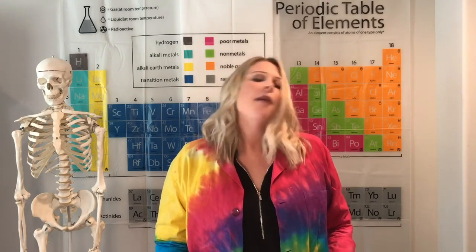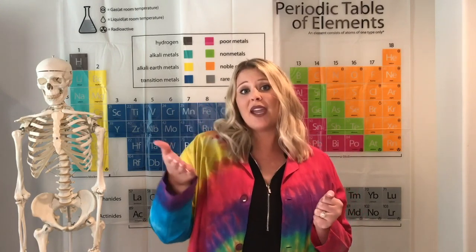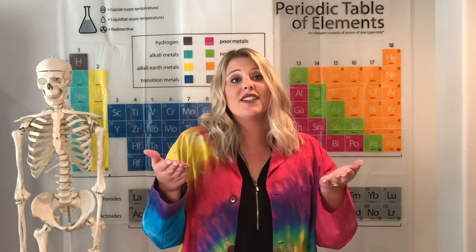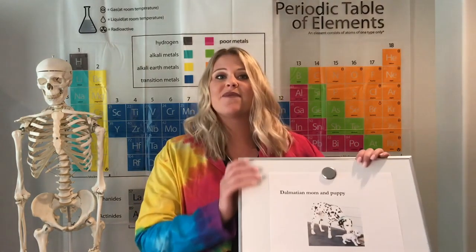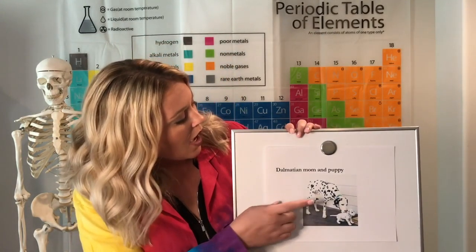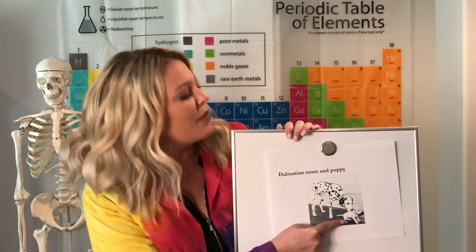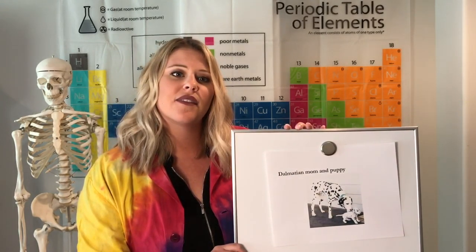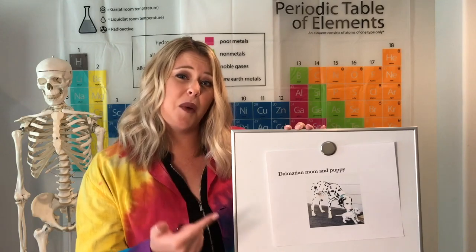We're going to take a look at some animals today — just pictures to start. We're going to be looking at a parent and an offspring. We're going to look at what the parent looks like and compare that to the offspring, finding characteristics — traits — that are similar between the two. The first one I have for you is a Dalmatian. We have a mom Dalmatian and we have a baby Dalmatian, or a pup. I'll give you a couple seconds. Do you see any traits that are similar between the pup and the mom Dalmatian?